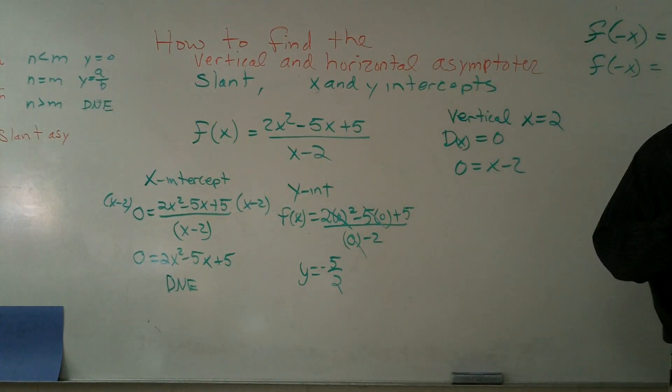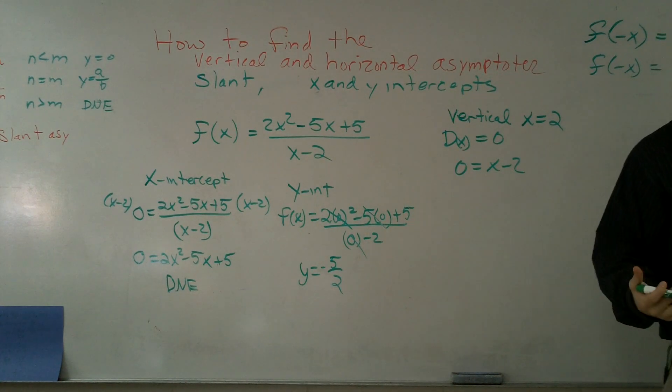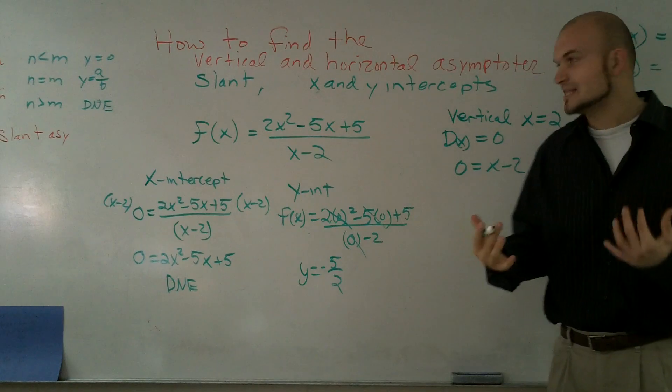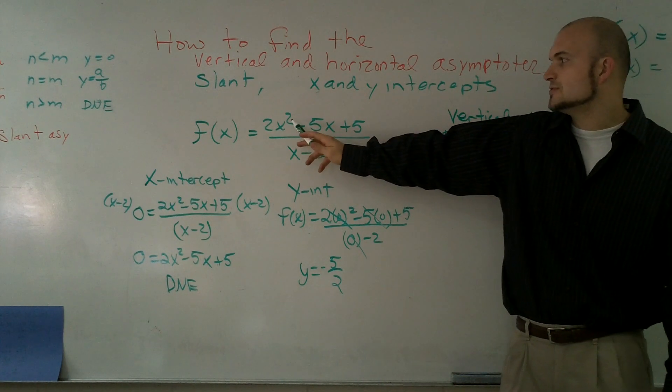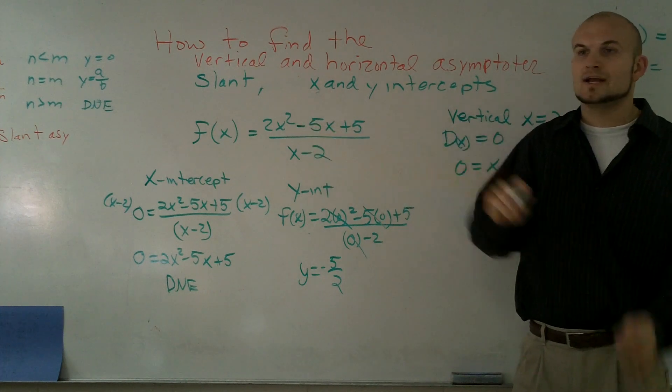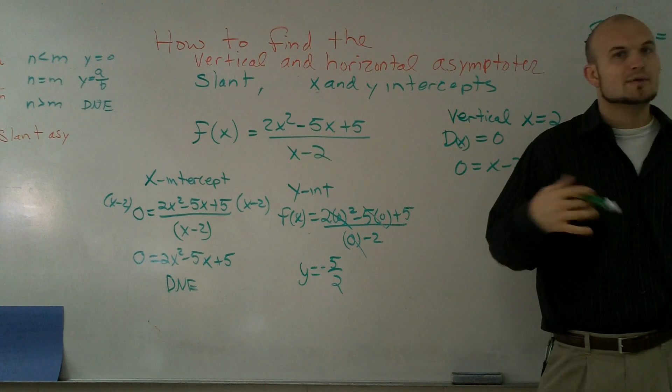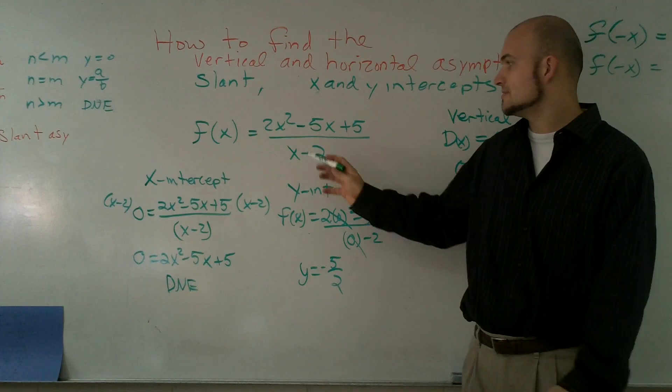So what I need to do is now search for, is there maybe a slant asymptote? And the way to determine if the slant asymptote is, you look at what is the difference between the degree on the numerator and the denominator. And if it has a difference of 1, then we can find out what the slant intercept is.